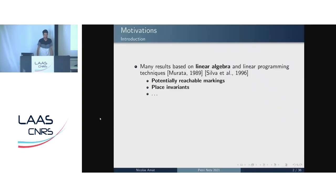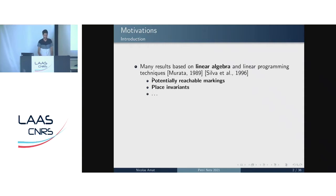To understand what led us to develop this new approach for the model checking of Petri nets, we can have a look at some well-known optimization techniques. Many results are based on linear algebra and linear programming techniques. For instance, we can obtain some potentially reachable markings by solving the state equation, or we can find some place invariants known as P-invariants. There are many other techniques based on linear algebra.